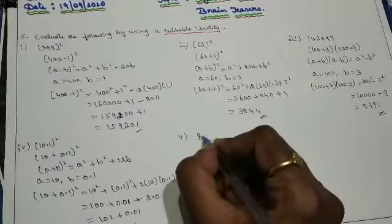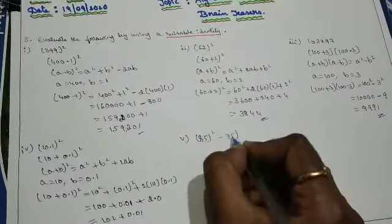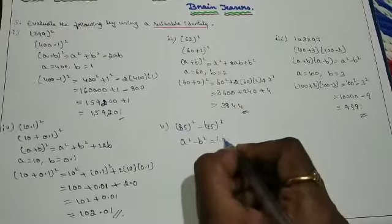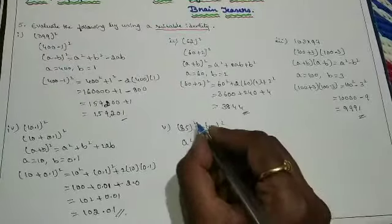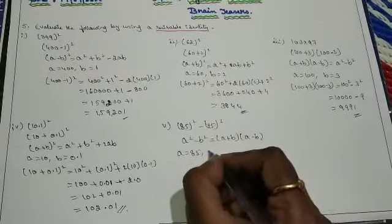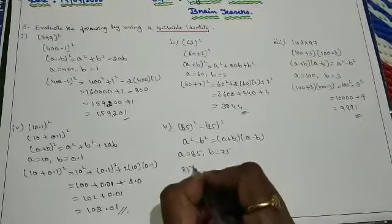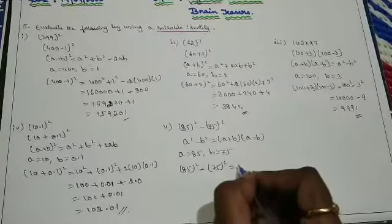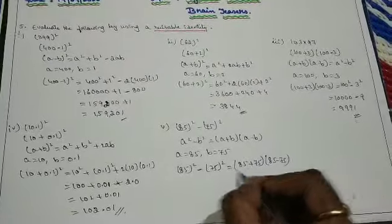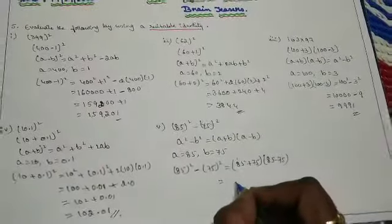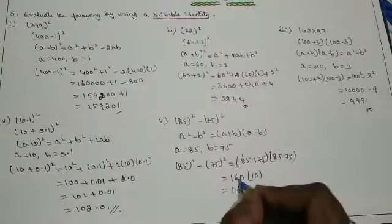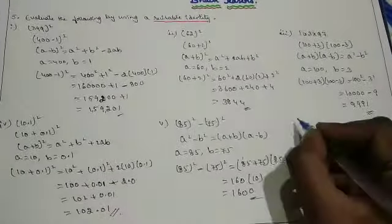The 5th question is 85 square minus 75 square. This is clearly A square minus B square. We know that A square minus B square is nothing but A plus B into A minus B. Don't go for taking the square of each number and subtracting — that's a waste of time. A value is 85, B value is 75. So: 85 plus 75 into 85 minus 75 equals 160 into 10, which gives 1600.